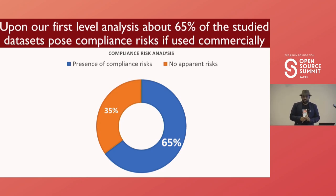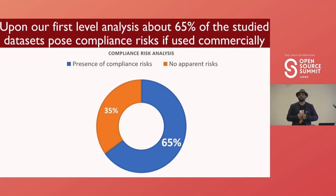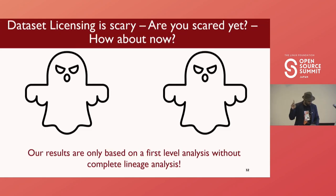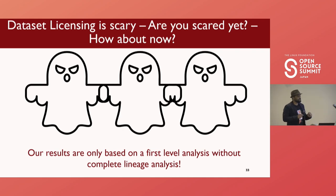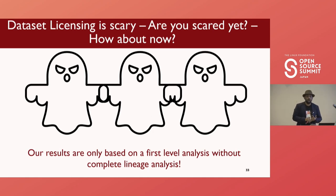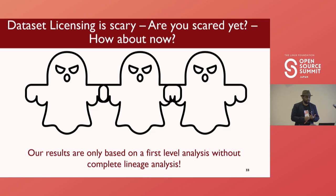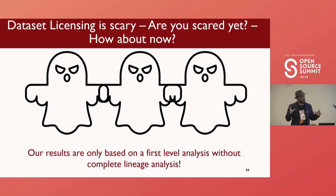We analyzed these datasets at the first level and found that 65% of them have risks associated with using them commercially. Our results are only based on the first level analysis, which means that if we dig into the full lineage of the remaining 35% of datasets, we might find additional risks associated with those too. Which means that none of the publicly available datasets can be used easily or trivially.